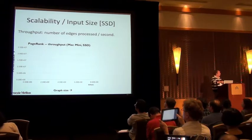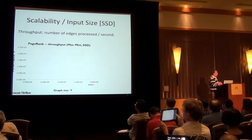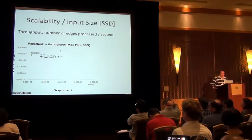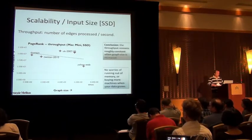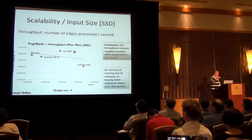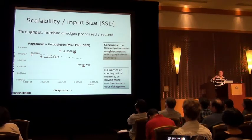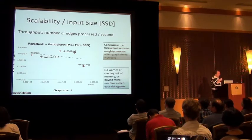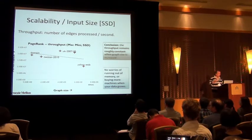So, here on the x-axis, you have the graph size measured as the number of edges, and y-axis is this throughput. And with our test cases, it's roughly constant. It's not completely constant, because there are some differences in the graph structure which affect this. And, especially the small graphs, they might fit into, for example, file system cache.